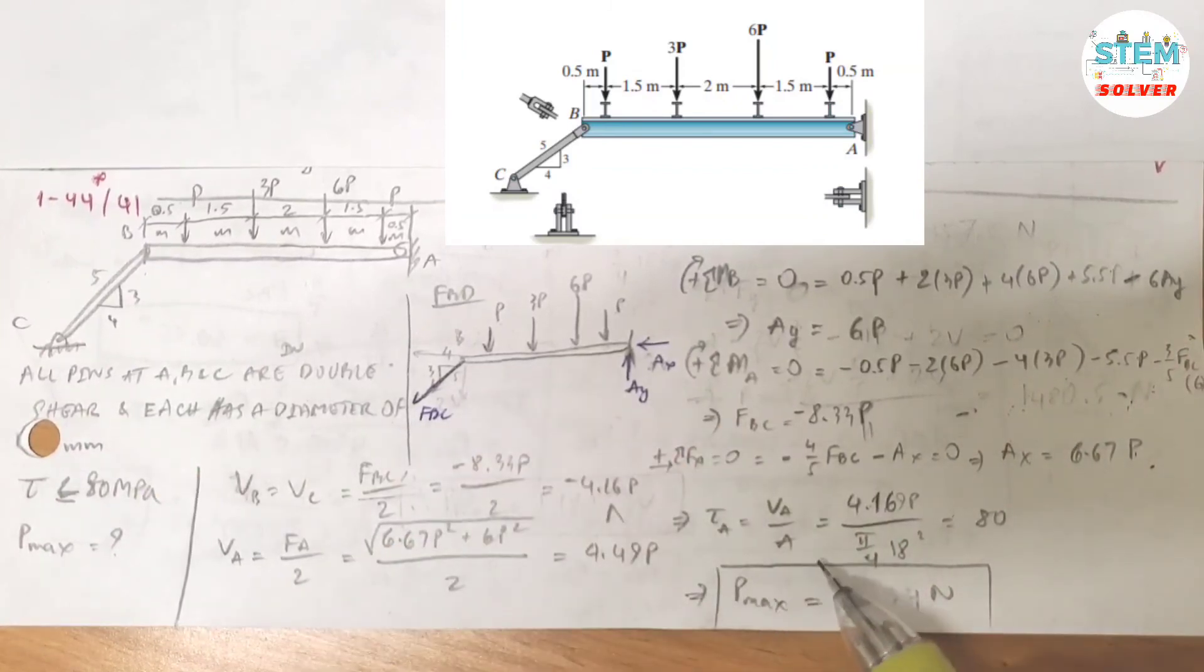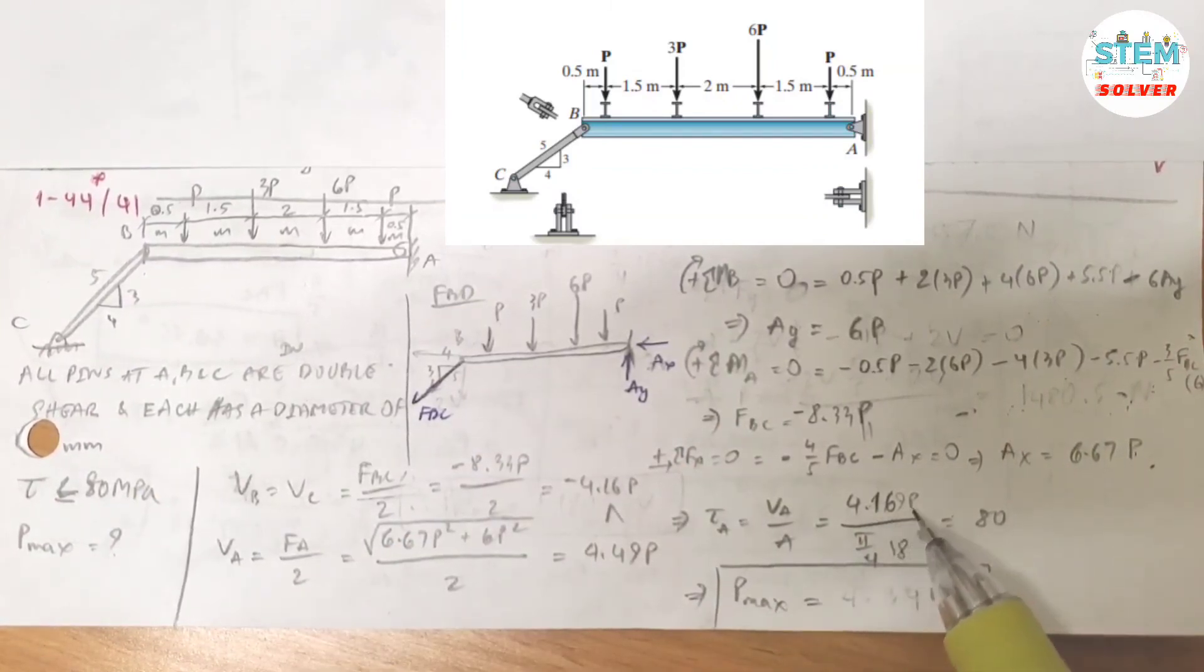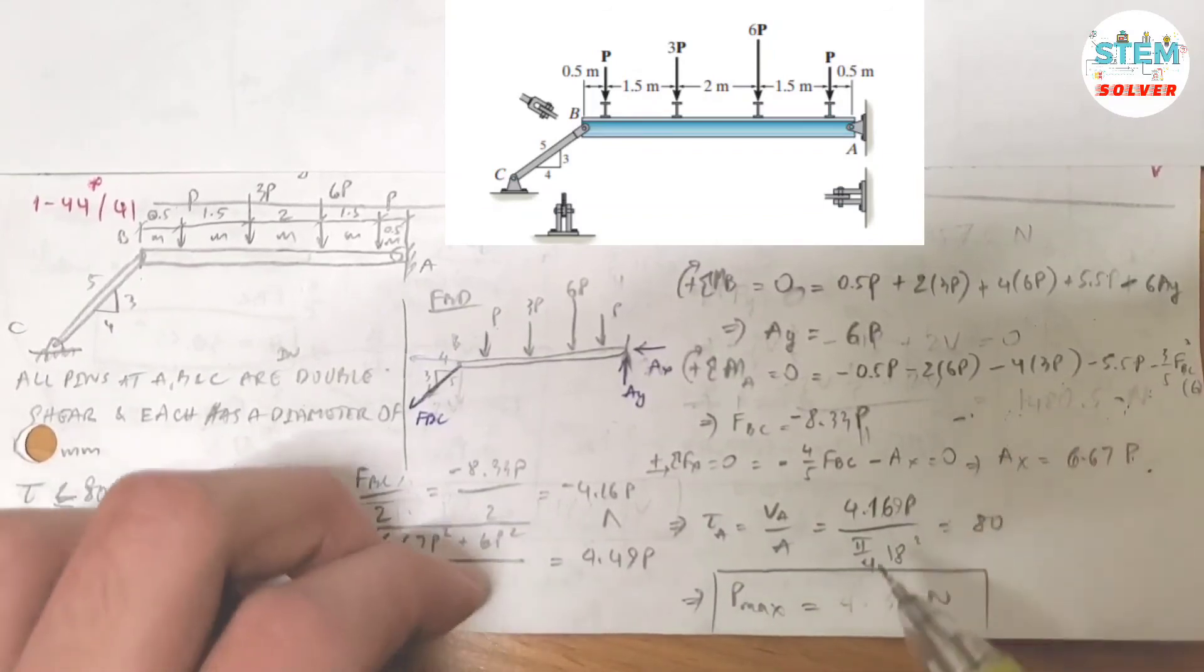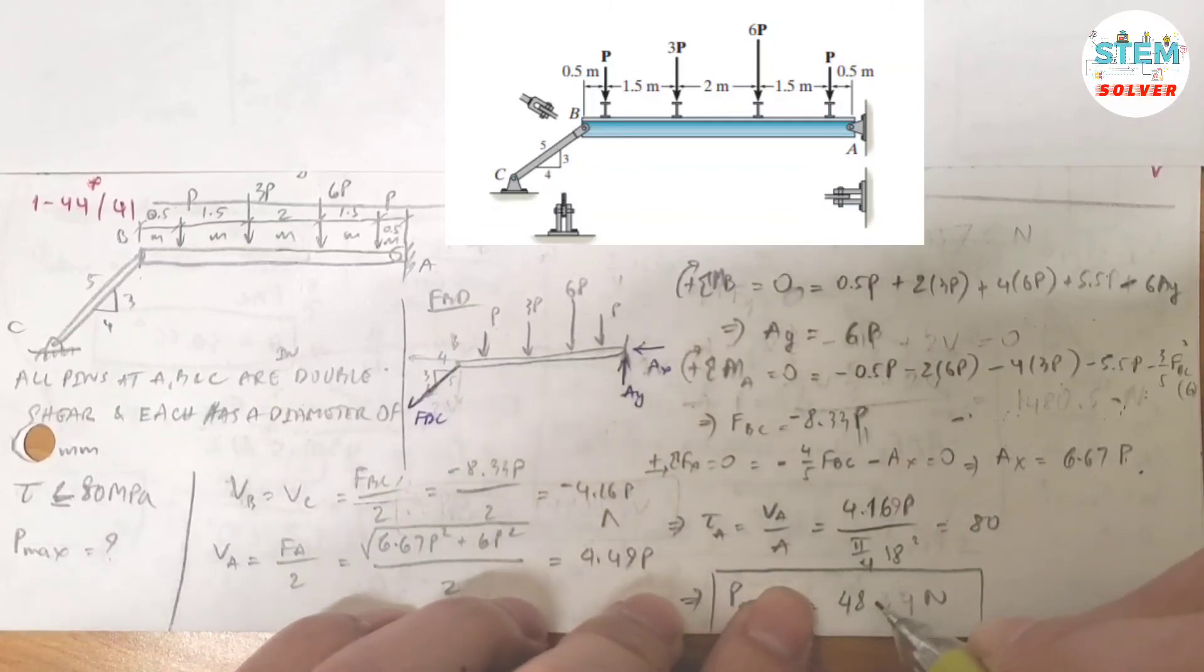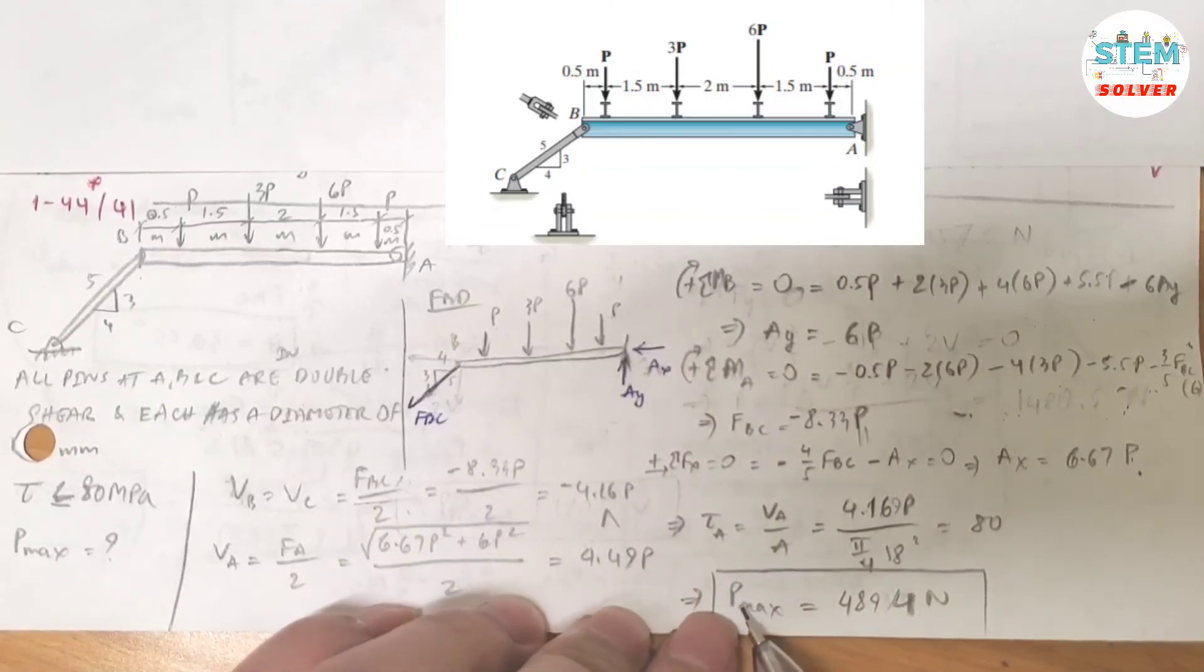So you plug into this formula. I have 4.16P divided by the area which is π over 4 times 18 squared and equals 80 MPa. Solve this, you get P equals 4894 newtons. So your maximum P force is 4894 newtons.